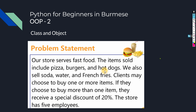Looking at the fast food problem: we sell pizza, burgers, hot dogs, soda water, and french fries. Clients may choose to buy one or more items. If they buy more than one item, they receive a special discount of twenty percent. The store has five employees.